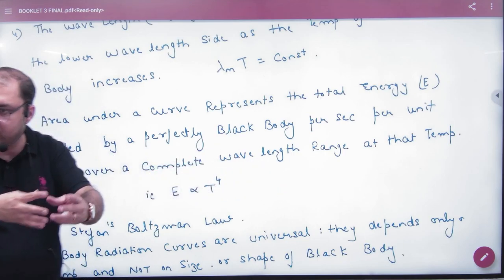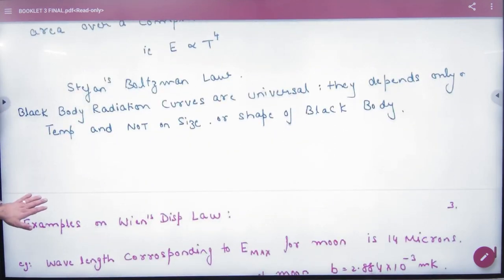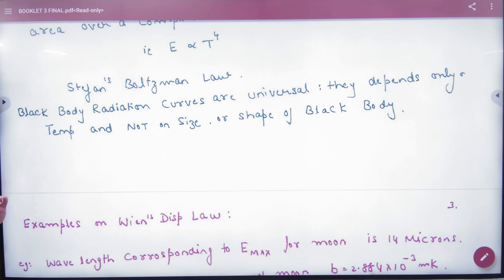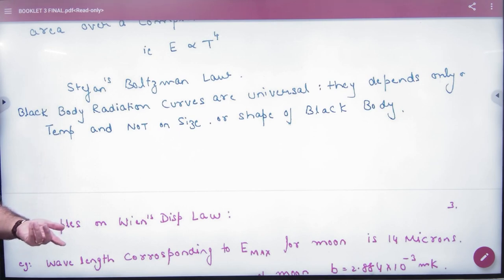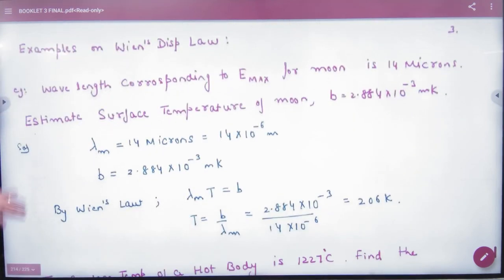The two laws are connected. Black body radiation curves are universal — they depend only on temperature and not on the size and shape of the body. For each temperature, the graph has the same characteristic shape regardless of shape or size.